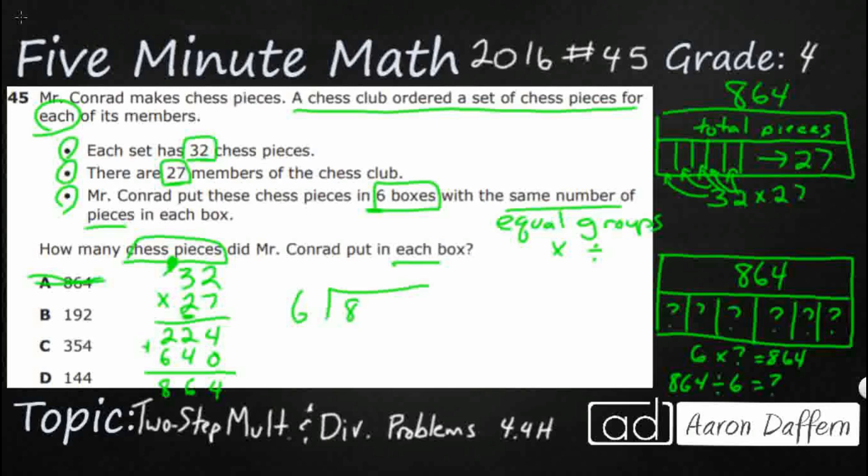Six into 864. Six goes into 8 one time. That's going to be six. You just bring down one number at a time. So that's 26. Six goes into 26 four times. That's 24. And bring down that 4. Six goes into 24 four times again. There's nothing left over. And so that is going to be my answer.